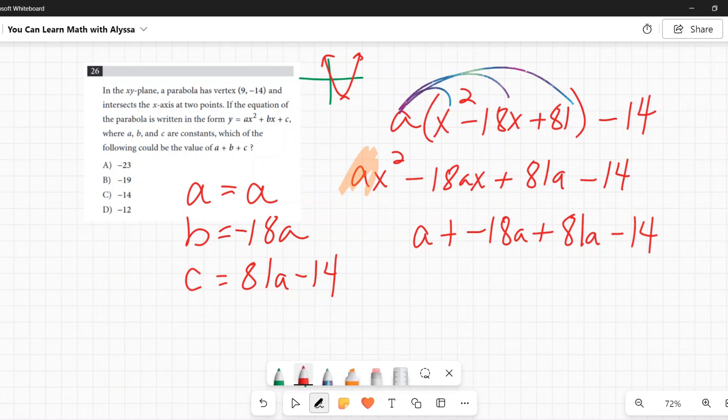All right, so if we have a plus a negative 18a plus 81a, you're going to get 64a. So 64a minus 14 is the same as a plus b plus c.